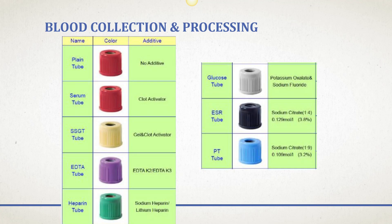Here you can see the different types of tops on blood collection tubes. A plain tube has no additive and the blood will clot. A serum tube has a clot activator added to increase the clotting process. Sometimes you'll see gel and clot activator tubes — often red with a yellow circle in the middle, called red gels — which contain both the clot activator and the gel.